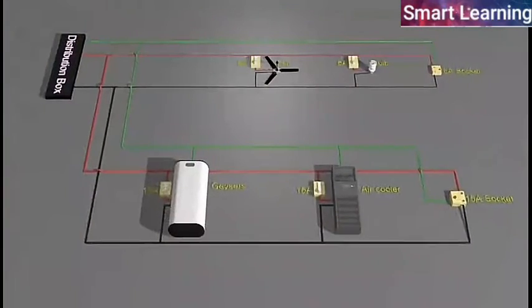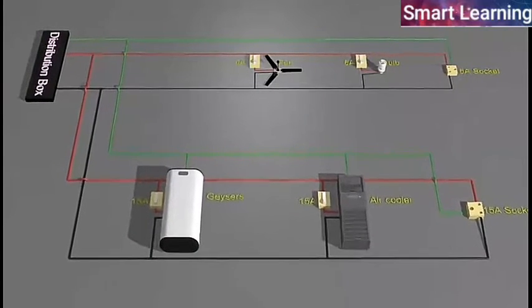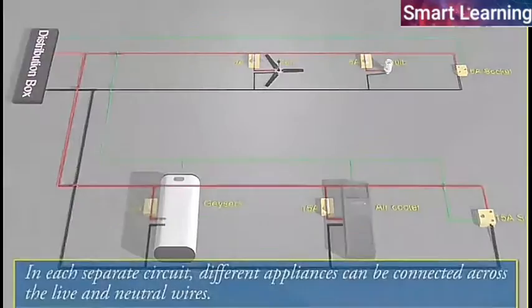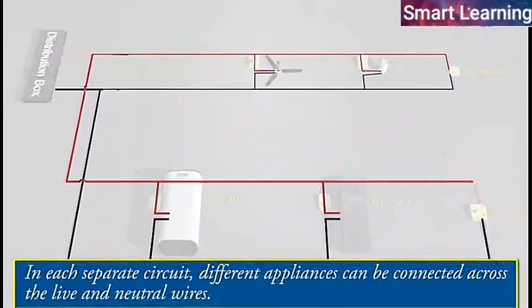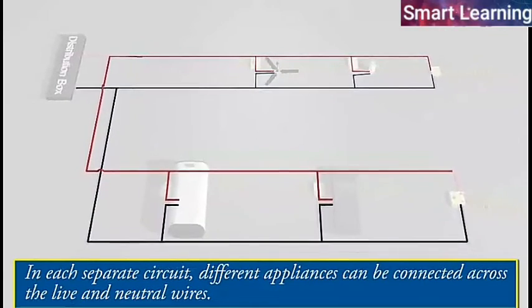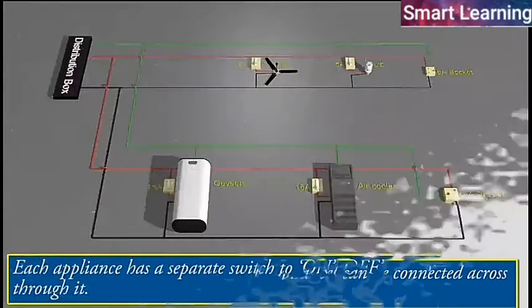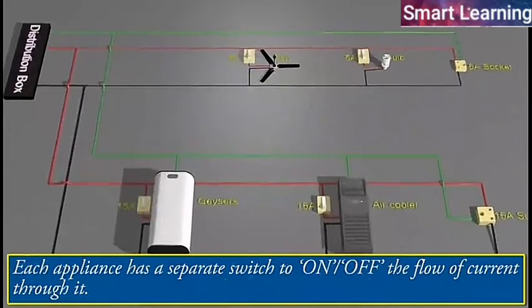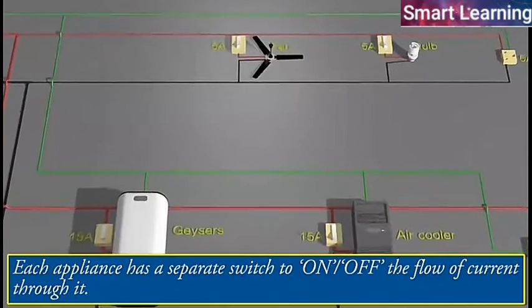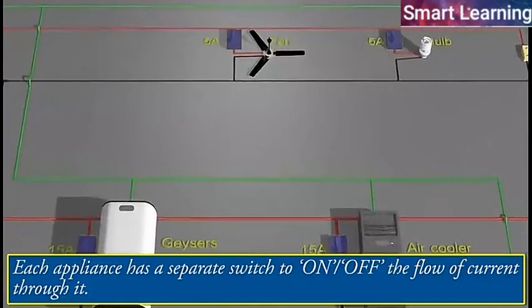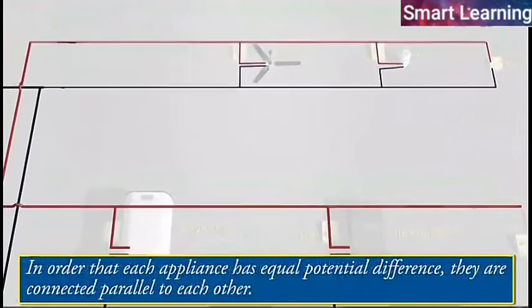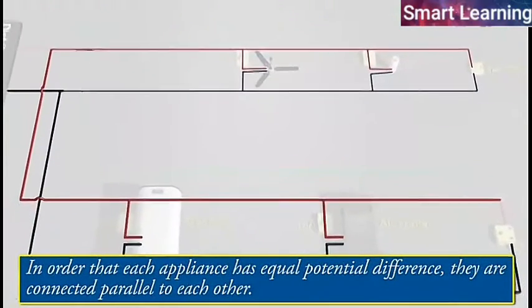Here you can see a schematic diagram of one of the common domestic circuits. In each separate circuit, different appliances can be connected across the live and neutral wires. Each appliance has a separate switch to turn on or off the flow of current through it. In order that each appliance has equal potential difference, they are connected parallel to each other.